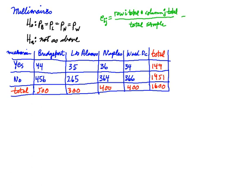To calculate the expected frequencies, I'm going to use the formula given in the text, and I'll start with Bridgeport. There were 44 millionaires out of 500. We're going to calculate what we would expect the frequency to be out of 500, given that all the percentages would be equal. Using the formula, I take the row I total — 44 is in the first row, and the first row total is 149 — then multiply by the column J total. The 44 is in the first column, and that total is 500. Then divide by the total sample of 1,600. I get 46.56 as my expected frequency for Bridgeport.